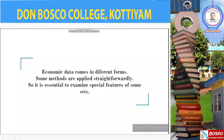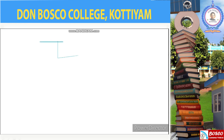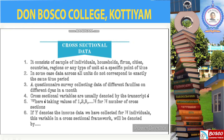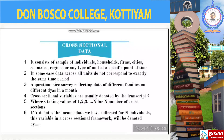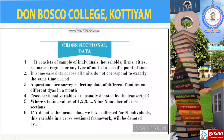A cross-sectional data set consists of a sample of individuals, households, firms, cities, countries, regions, or any other type of unit at a specific point in time. In some cases the data across all units do not correspond to exactly the same time period — for example, a survey that collects data from questionnaire surveys of different families on different days within a month. In this case we can ignore the minor time differences, and the data collected will still be viewed as a cross-sectional data set. In econometrics, cross-sectional variables are usually denoted by the subscript i, with i taking values 1, 2, 3, up to N for N number of cross sections.